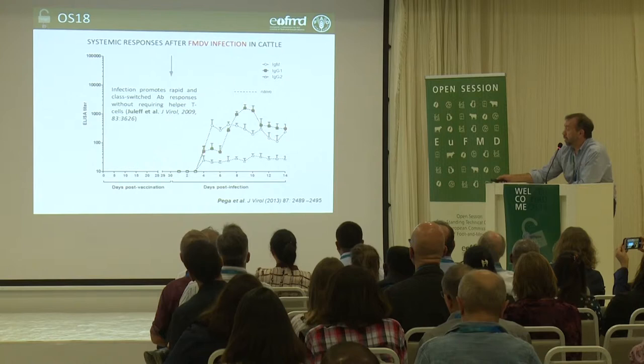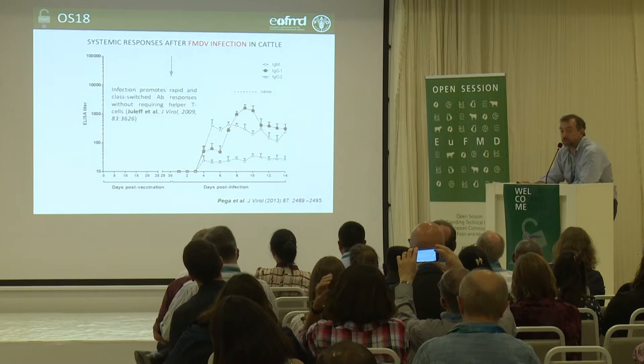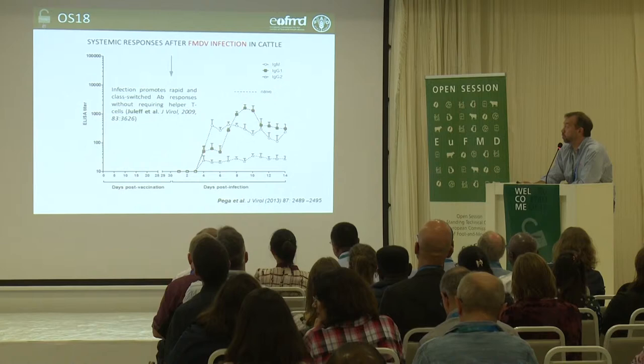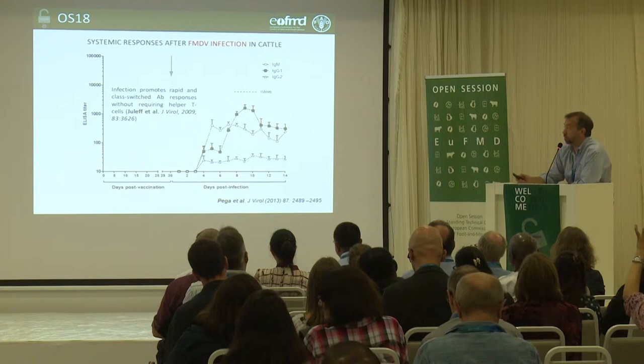This, of course, complements previous information by Brian Charleston's group, where they describe that the immune response against infection in cattle follows a T-independent manner — so this could be accomplished without the collaboration of T cells.